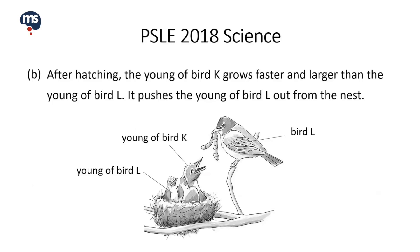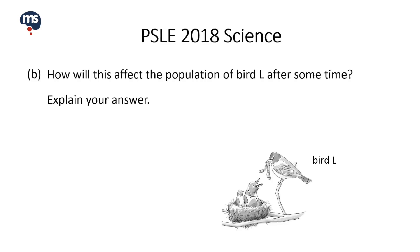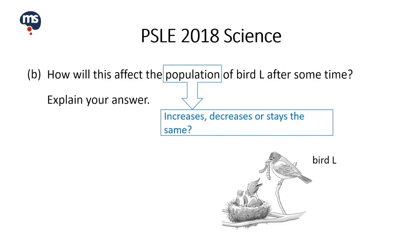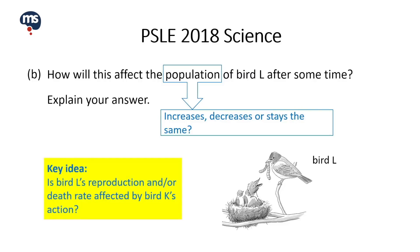Let us now take a look at Part B. After hatching, the young of bird K grows faster and larger than the young of bird L. It pushes the young of bird L out from the nest. How will this affect the population of bird L after some time? The key idea here is whether bird L's reproduction rate and/or death rate is affected by bird K's action.